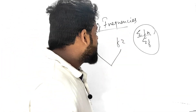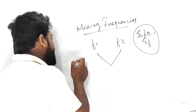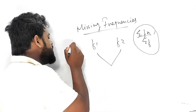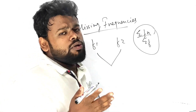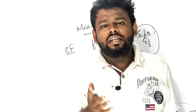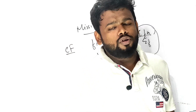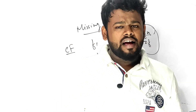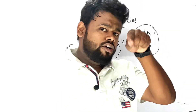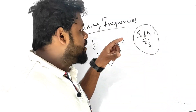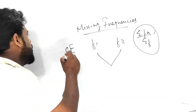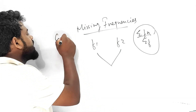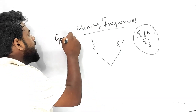Another important topic: cumulative frequencies (CF). You have to draw the ogive graph — plot the midpoints, connect them — the graph is very important. Another graph-based question I want to highlight is in the case of reflection.